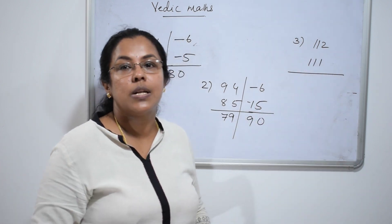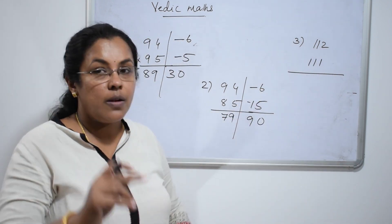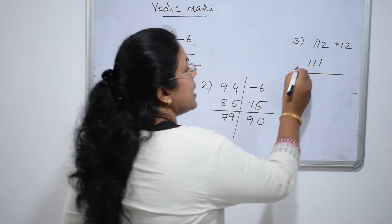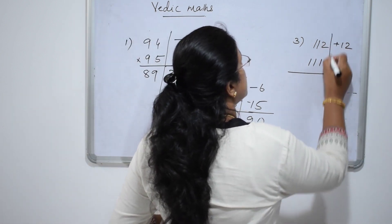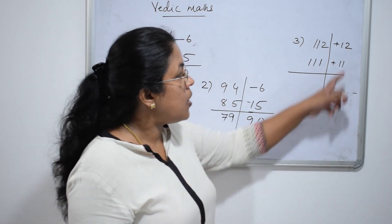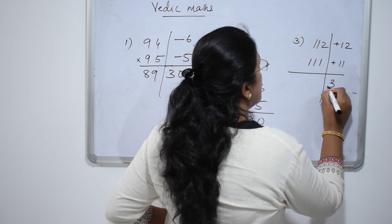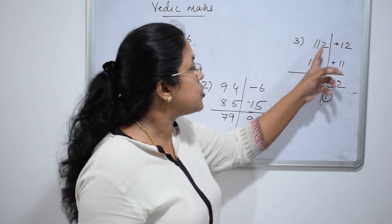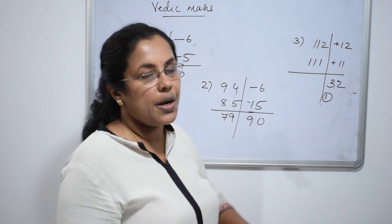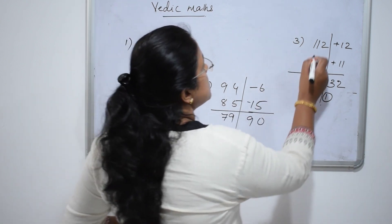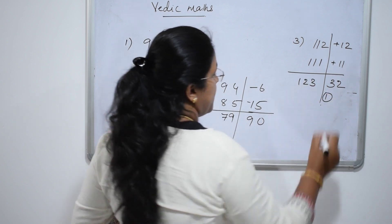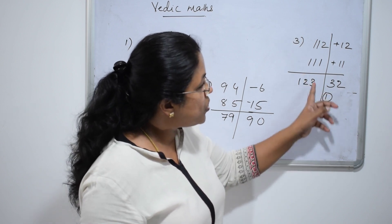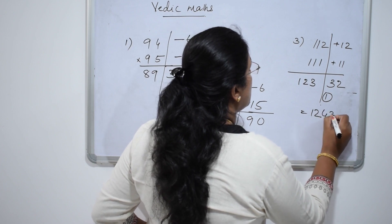One more question: 112 into 111. 112 is 12 greater than 100, so write plus 12; and 111 is 11 greater than 100, so write plus 11. Now 12 into 11 is 132 — but since the base is 100, write 32 and carry over 1. Add 12 to 111 — or 11 to 112 — giving 123, plus the carry of 1 gives 124. So the final answer is 12432.